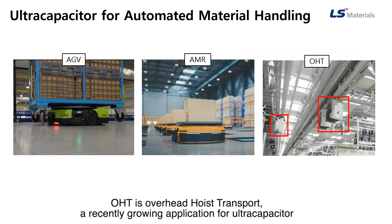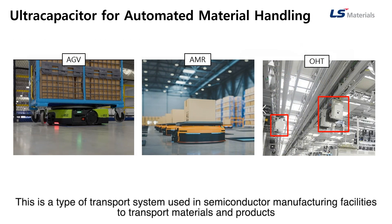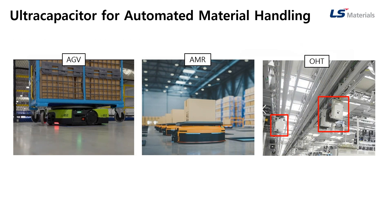OHT is Overhead Hoist Transport, which is also a recently growing application for Ultra Capacitor. This is a type of transport system used in semiconductor manufacturing facilities to transport materials and products. The system operates on an overhead rail.